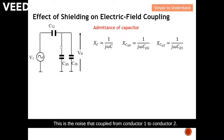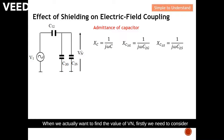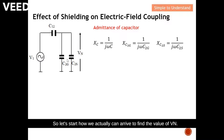So Bn is our objective — our objective is to find the value of Bn. When we want to find the value of Bn, firstly we need to consider the combined admittance of these two capacitors that are in parallel. So let's start on how we can arrive at the value of Bn.